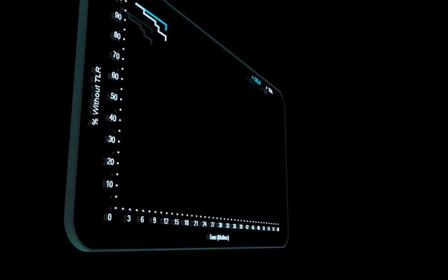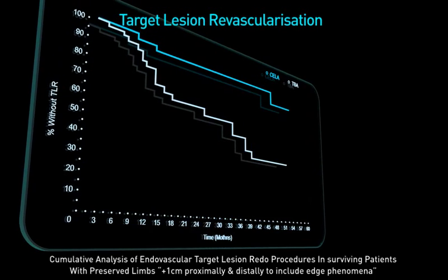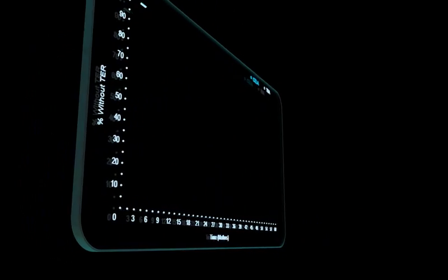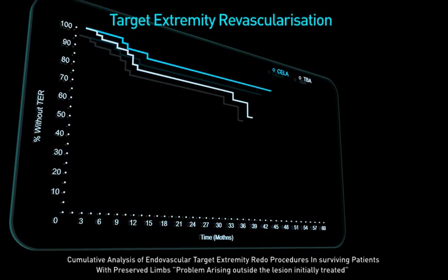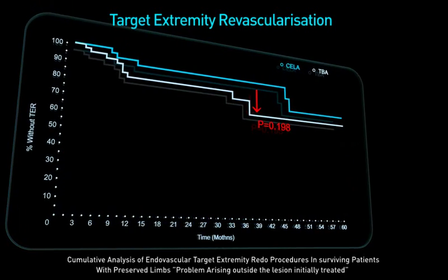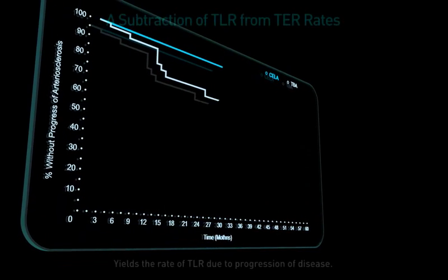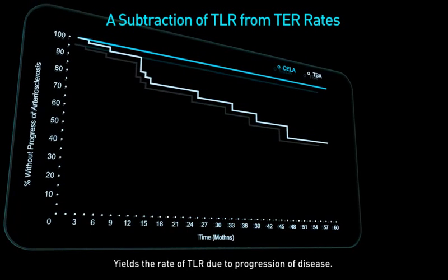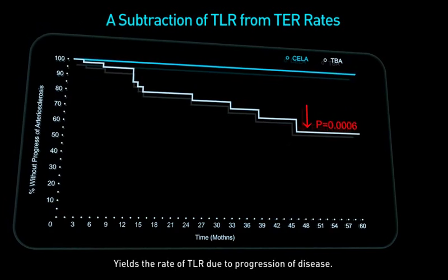Freedom from endovascular target lesion redo procedures, including the edge phenomenon, was statistically significant in favor of laser up to 5 years at 93% vs. 62%. Freedom from endovascular target extremity redo procedures, where problems arose outside the initially treated lesion, was enhanced with laser at 88% vs. 78%. The subtraction of TLR from TUR rates yields the rate of revascularization due to progression of arteriosclerosis, which was significantly higher post tibial balloon angioplasty, highlighting the systemic effect of laser.